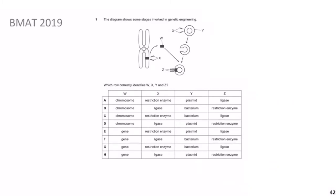Let's start with BMAT 2019 question 1. The diagram shows some stages involved in genetic engineering, and the question asks which row correctly identifies W, X, Y, and Z. If you're not feeling confident, skip straight to the answers, but if you are, give it a go — remember timing is key for the BMAT. Give yourself a minute and come back to check your solutions.